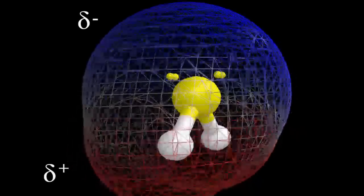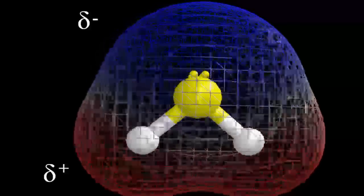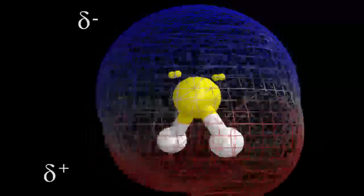If we have two poles, that means we have a polar molecule. So H2S is a polar molecule.